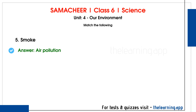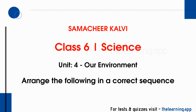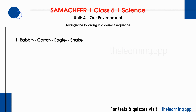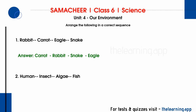Fourth: desert — correct answer is terrestrial ecosystem. Fifth: smoke — correct answer is air pollution. Next, arrange the following in correct sequence. Food chain one: Rabbit, Carrot, Eagle, Snake — the correct sequence is Carrot → Rabbit → Snake → Eagle. Food chain two: Human, Insect, Algae, Fish — the correct sequence is Algae → Insect → Fish → Human.